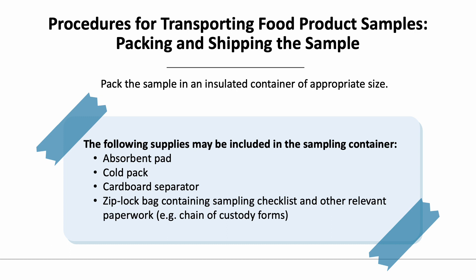The following supplies should be included in the sampling container: an absorbent pad, cold packs, a cardboard separator, and ziplock bags containing the sampling checklist and other relevant paperwork such as chain of custody forms. When preparing to ship your samples, double check the shipping label to make sure it is going to the correct lab and that your shipping container does not have any additional expired shipping labels on it.